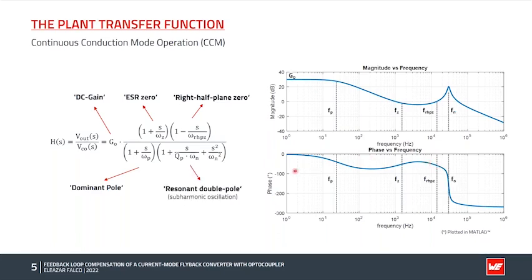Then we have the right half-plane zero, which acts like a zero in the magnitude — causing it to increase — but it behaves like a pole in the phase curve, causing additional phase lag. Finally, we have a resonant double pole at half of the switching frequency, which represents the sub-harmonic oscillation instability that happens in peak current mode control systems as the duty cycle approaches or exceeds 50 percent. This resonant double pole causes a peaking in the magnitude whose amplitude is directly proportional to the duty cycle, and also causes a dramatic phase lag of minus 180 degrees.